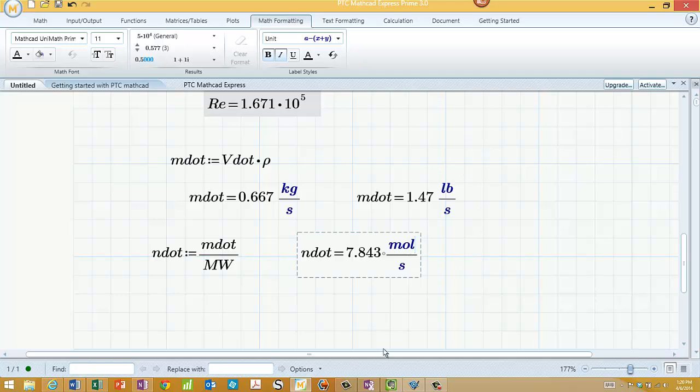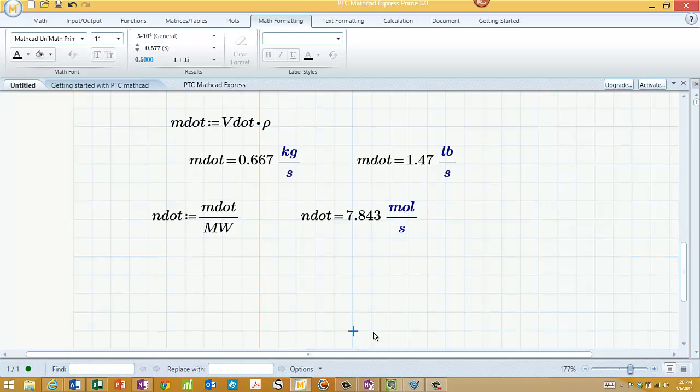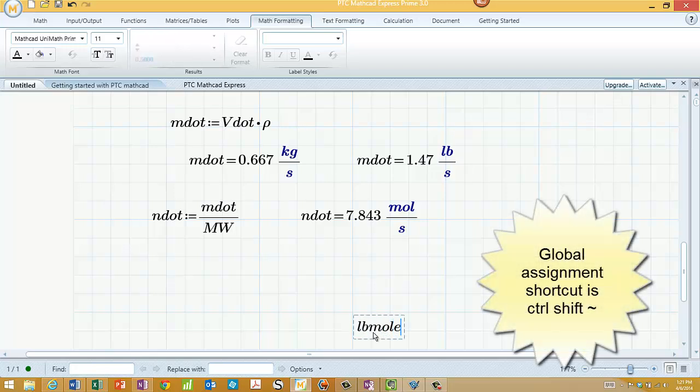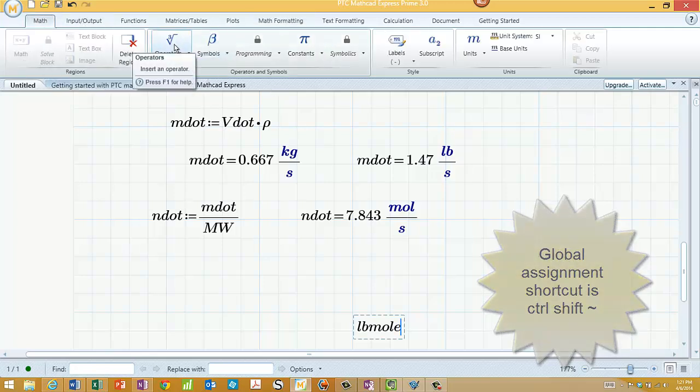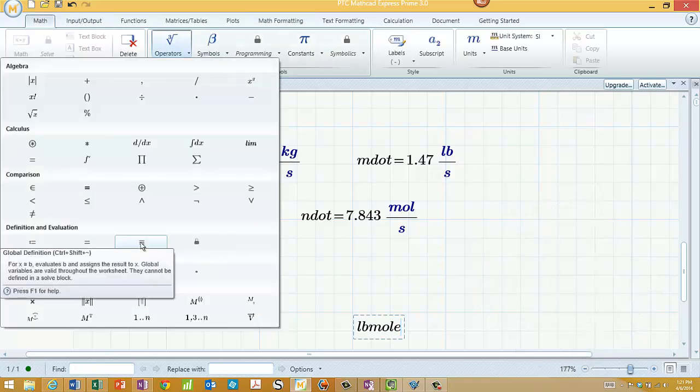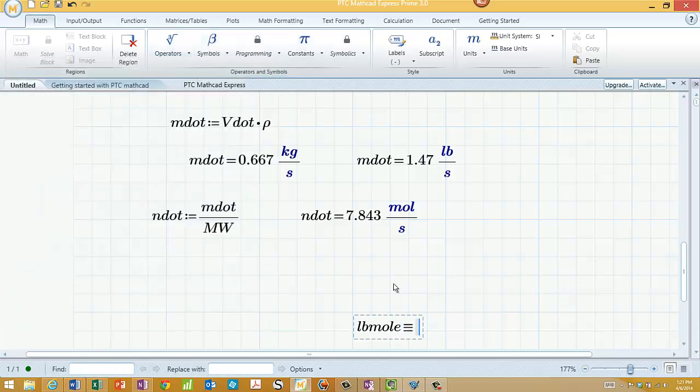And if we just define it, and I'm going to use a different kind of equal sign here. This is a priority assignment. So I'm going to say it'll be lbmole. And I'm going to use the, if I look at math and operation, just see it's down here. And they call it a global definition now.